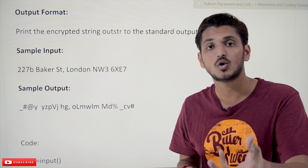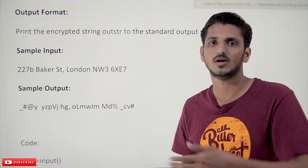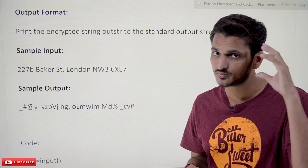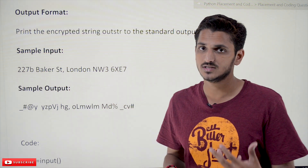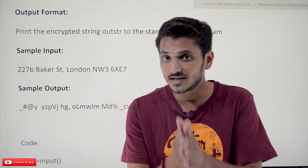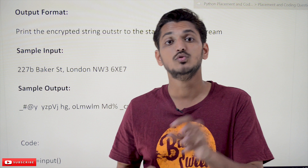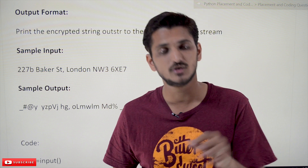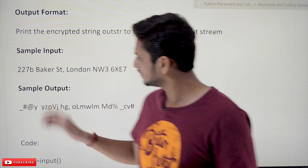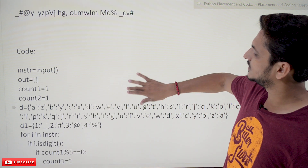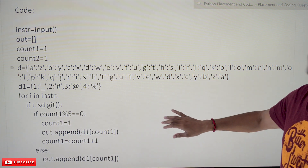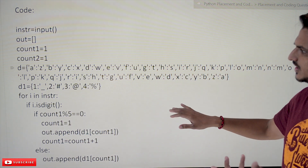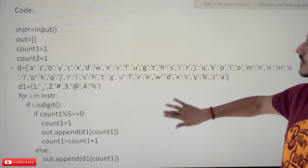We have done examples on the modulus operator in C programming and Python, and those basic examples will help you write the code easily. We are giving this as practice because next year you may not get the same question, but you will get a similar type of question. Try to solve it in 20 minutes. We will provide the code, but our suggestion is: don't watch the code first — try to solve it on your own, then check. You can follow your own logic.